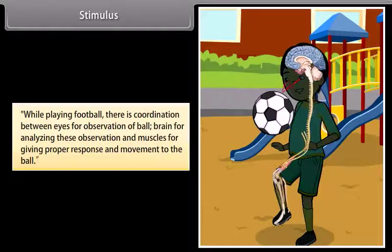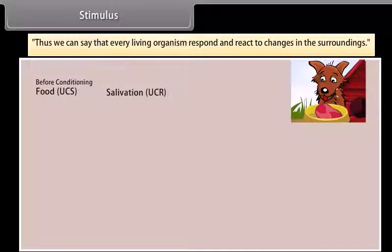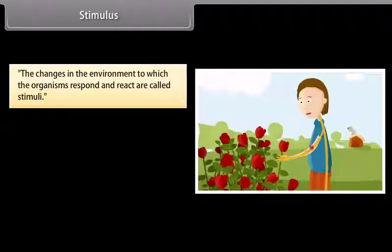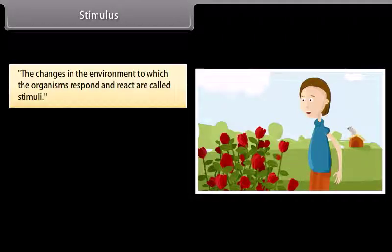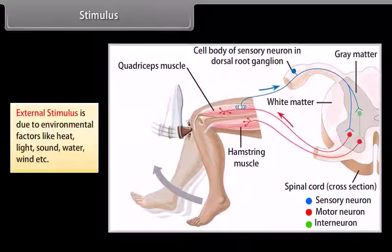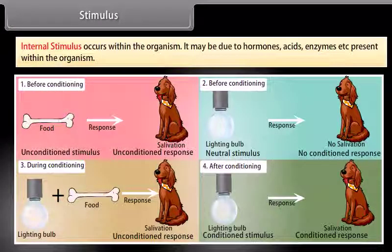Stimulus. While playing football, there is coordination between eyes for observation of the ball, the brain for analyzing these observations, and muscles for giving proper response and movement to the ball. Every living organism responds and reacts to changes in the surroundings. The changes in the environment to which organisms respond and react are called stimuli. Stimuli are of two types: external stimulus and internal stimulus. External stimulus is due to environmental factors like heat, light, sound, water, wind, etc. Internal stimulus occurs within the organism; it may be due to hormones, acids, enzymes, etc. present within the organism.